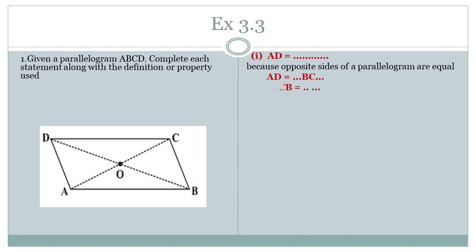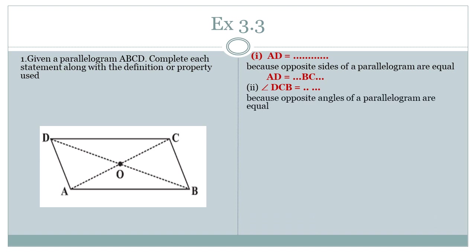Second part: angle DCB equals dash. Angle DCB means angle C. We know that opposite angles of a parallelogram are equal. The opposite of angle DCB is angle DAB, so they will both be equal.